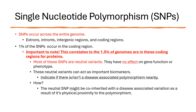SNPs can occur across the entire genome — they pop up in exons, introns, intergenic regions, and even coding regions. Interestingly, only about 1% of SNPs occur in the coding region of our DNA, which aligns with the fact that only about 1.5% of our genome is dedicated to coding for proteins. Most of these SNPs are what we call neutral variants — just like some of Loki's variants might not significantly impact the multiverse, these SNPs have no effect on gene function or phenotype. They just exist without causing any notable changes.